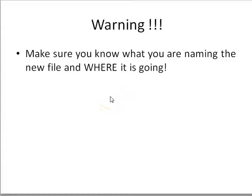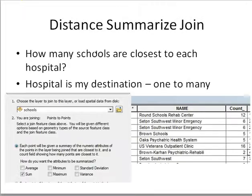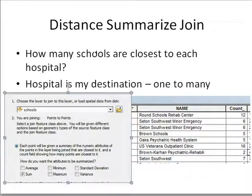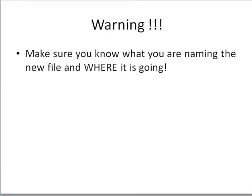ArcGIS automatically creates a new feature class and names it Spatial Join 1, Spatial Join 2, Spatial Join 97, and so on. Make sure you specify where to save it and what to call it — don't let it go into your default geodatabase. I recommend keeping a log of what you've done: hospitals as destination, schools as source, called it this name. That way if the result isn't what you wanted, you remember what you did.